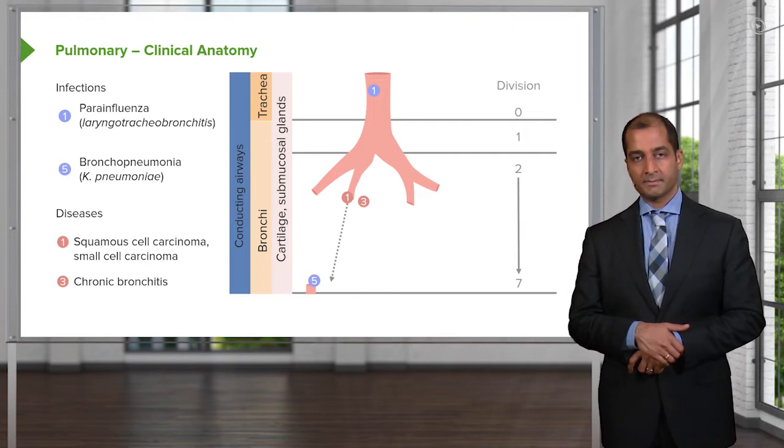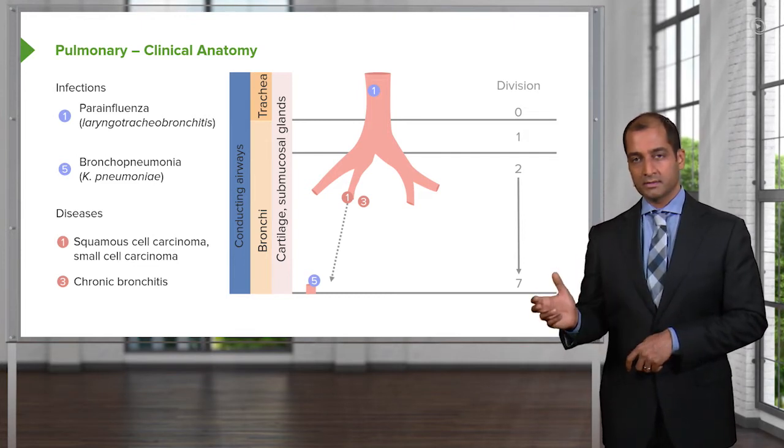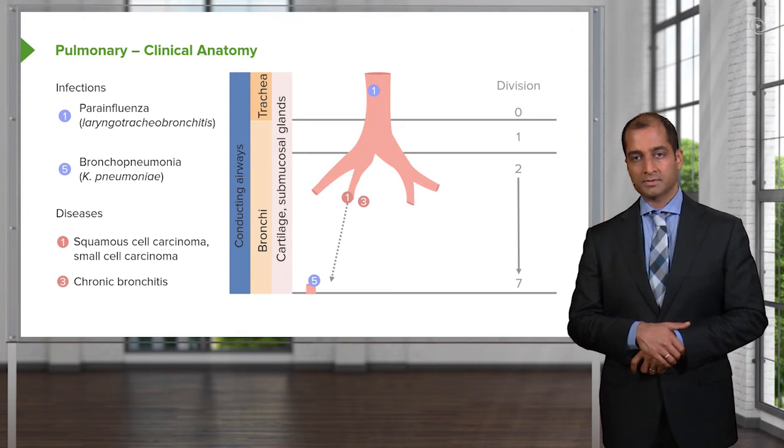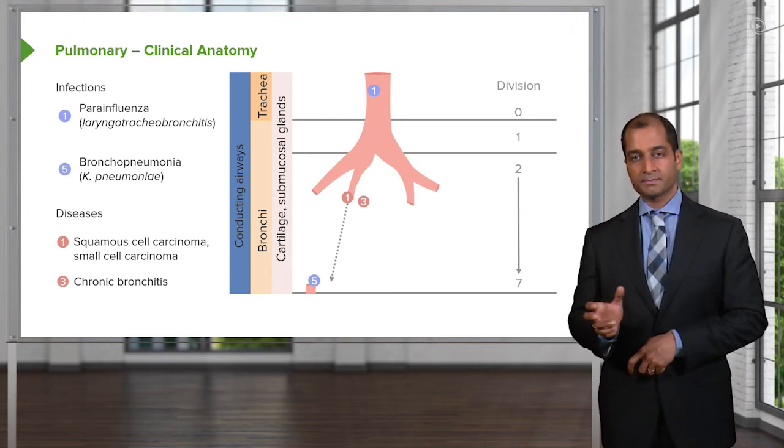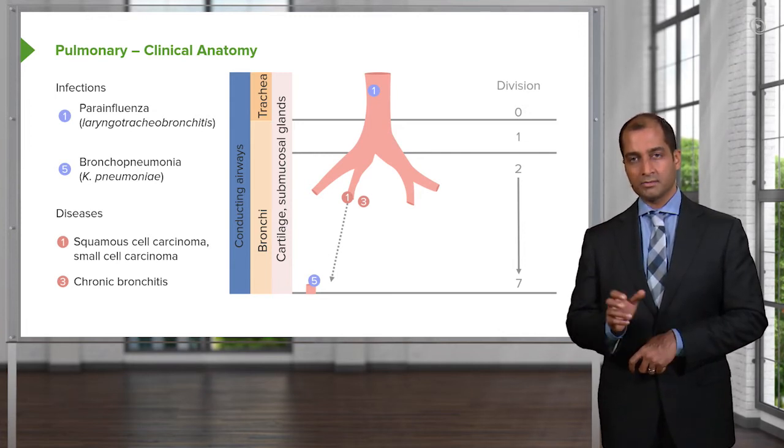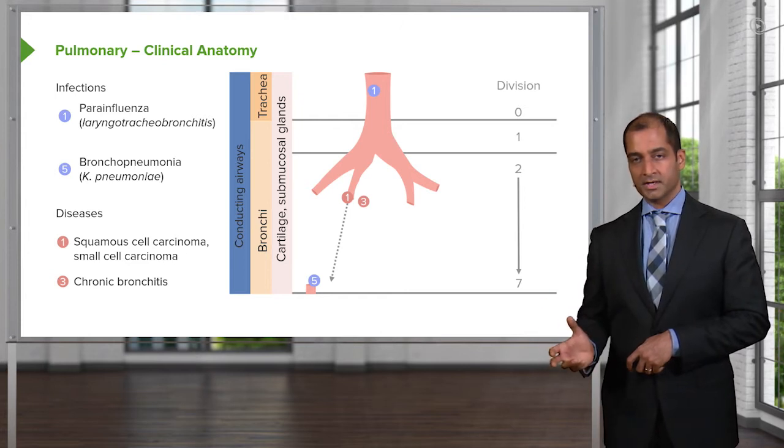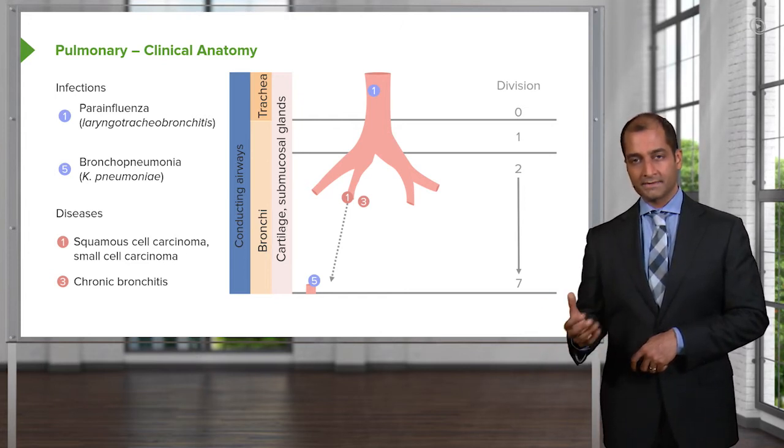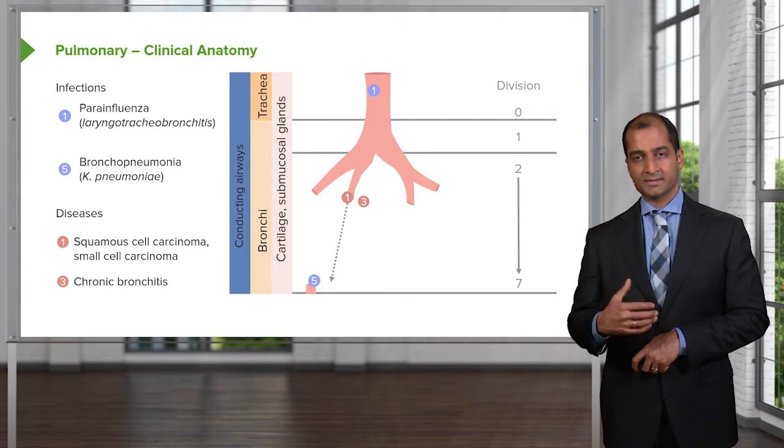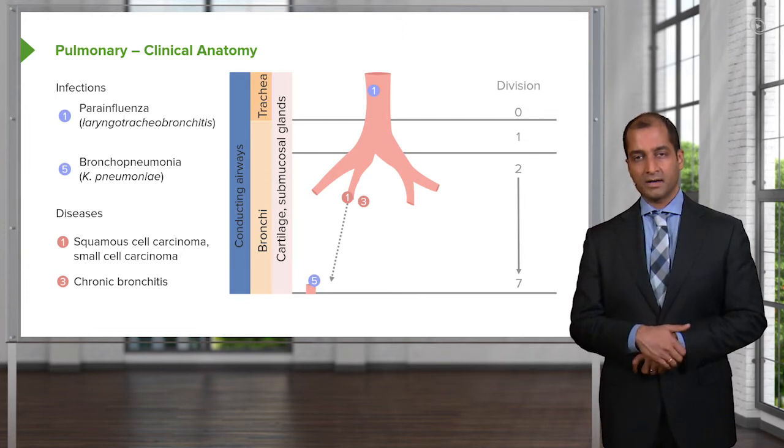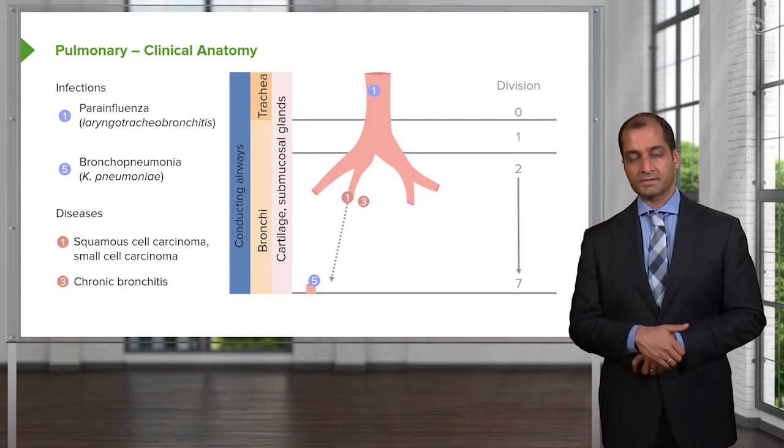And we have another infection, number five. And we'll take a look at this. Located, blue, circle five. And that's your bronchopneumonia. Allow the name to speak to you. Broncho means to say that you have involvement of the bronchi. So, we will see this later on as well as we get into distal segments. But giving you an understanding that this is involving the bronchi. A common organism here would be Klebsiella pneumonia.